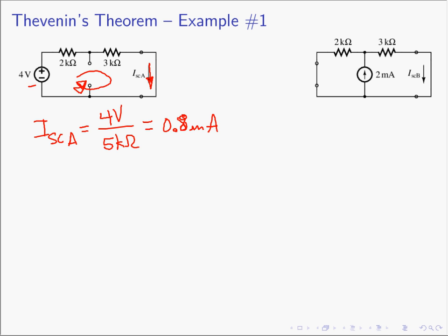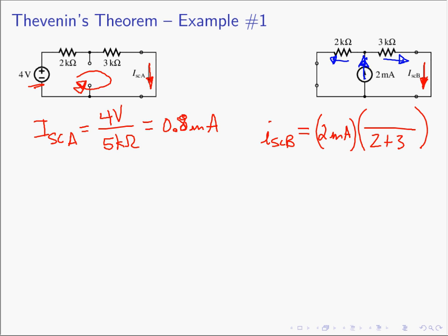Now we kill the 4 volt source and turn the current source back on. We're looking for I_SC_B, the current through R_L's shorted location due to the 2 milliamp source acting alone. Looking at the circuit, we have a textbook example of current division. The 2 milliamps divides between a 2kΩ and a 3kΩ resistor. I'm looking for the current in the 3kΩ branch, so we put the 2k on top. I_SC_B is also 0.8 milliamps.